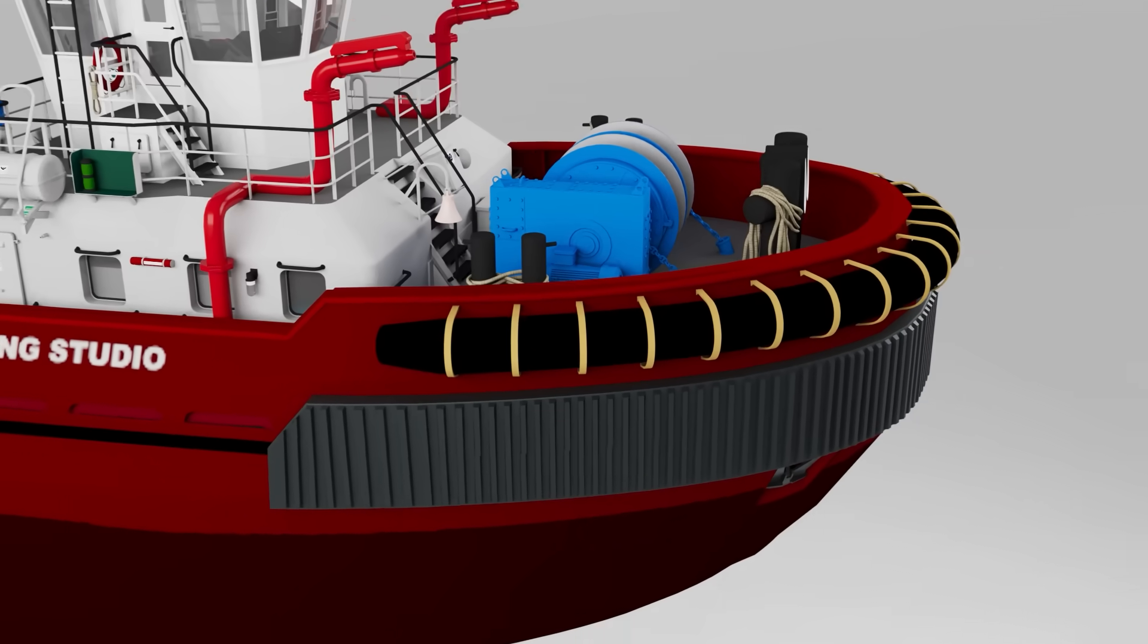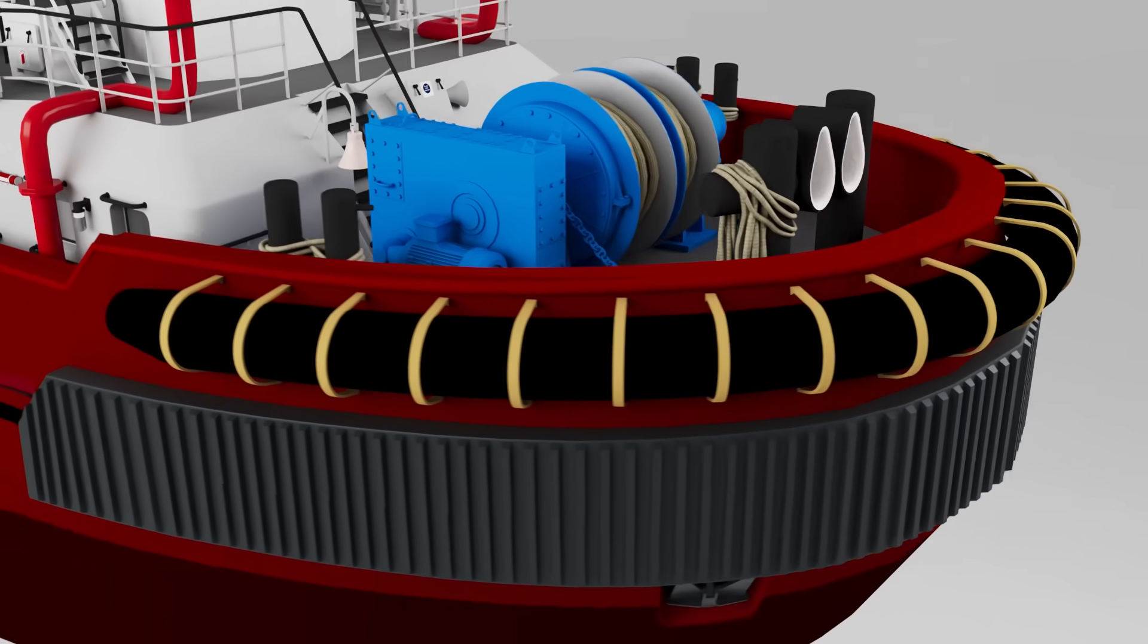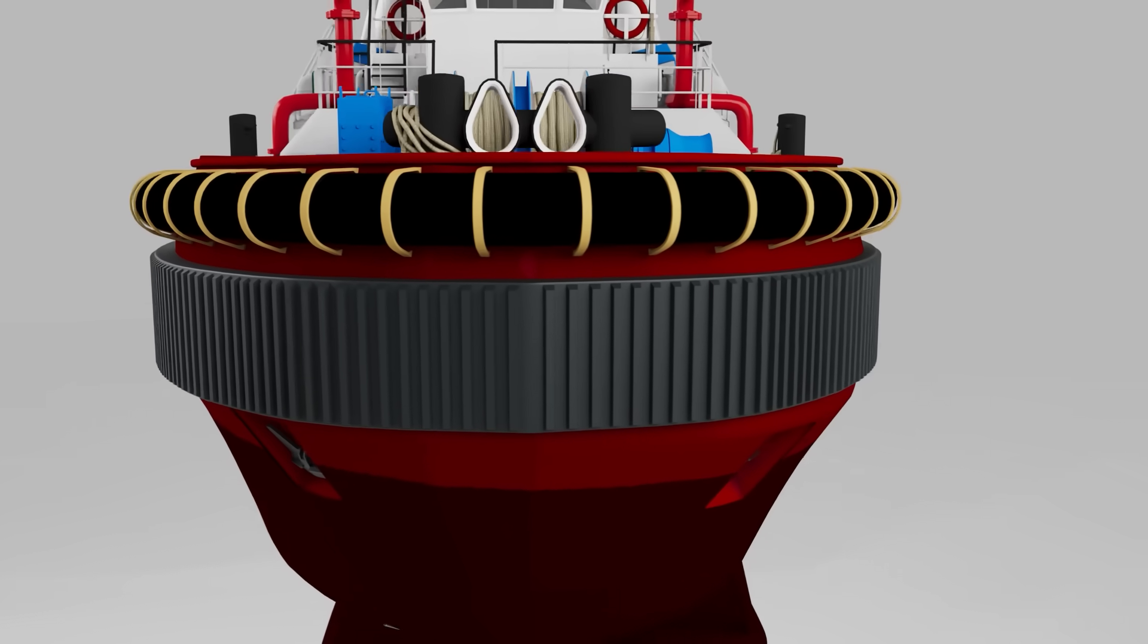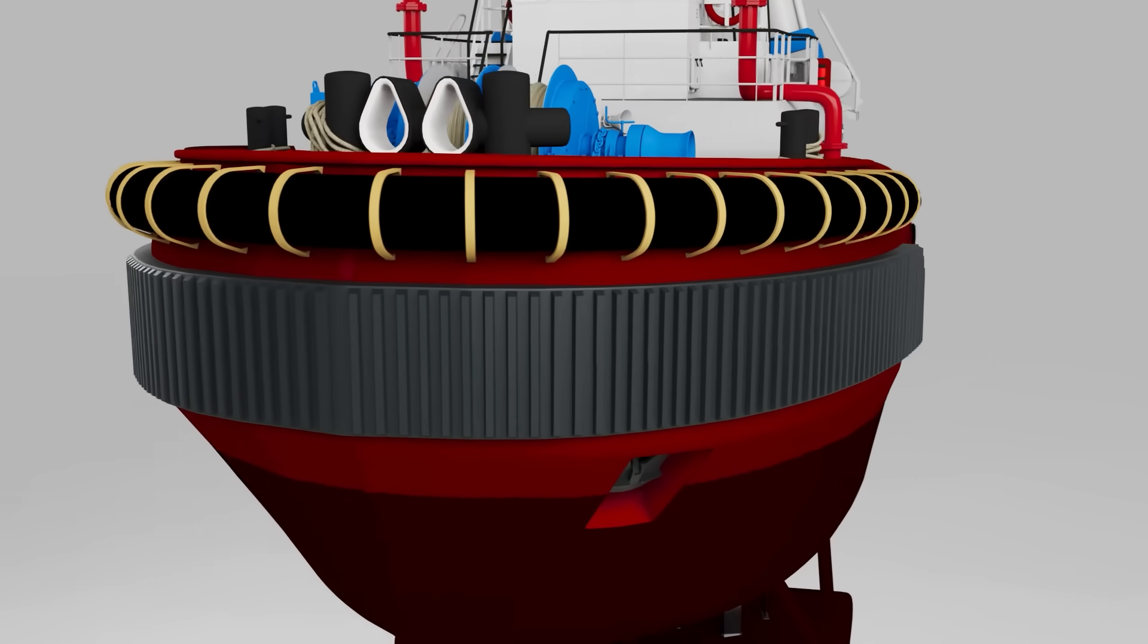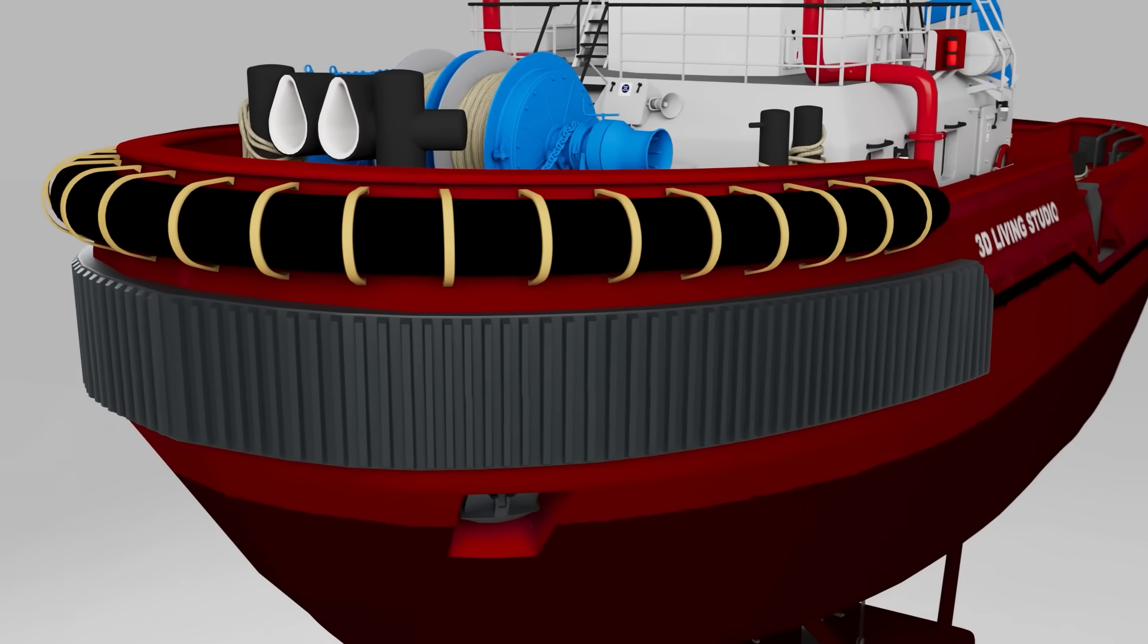Around the tug are inflatable rubber fenders, which act as cushions to protect both the tug and the ship it's assisting during close contact.